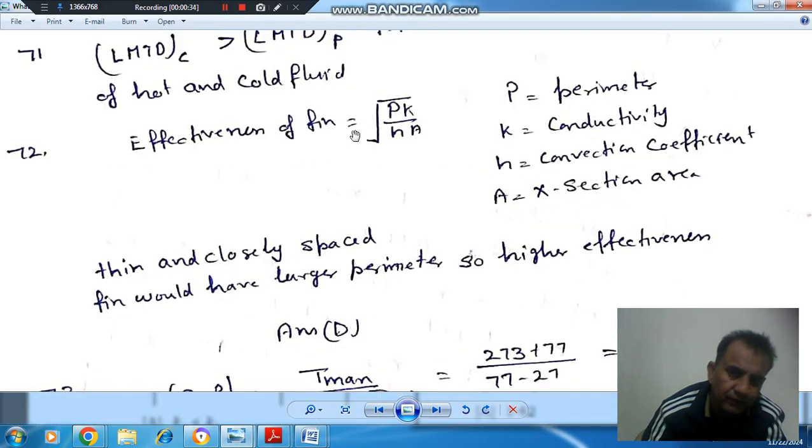So we know that effectiveness for a fin is root P K by h A. P is perimeter, K is conductivity, h is convection coefficient, and A is cross-section area.